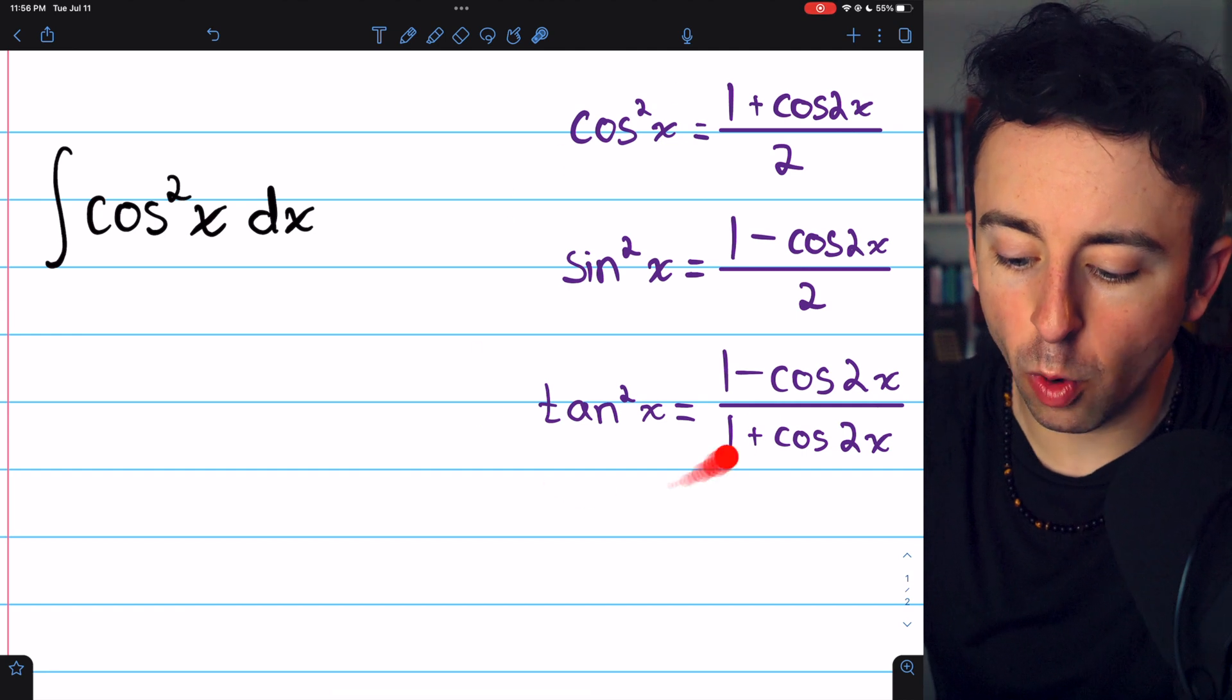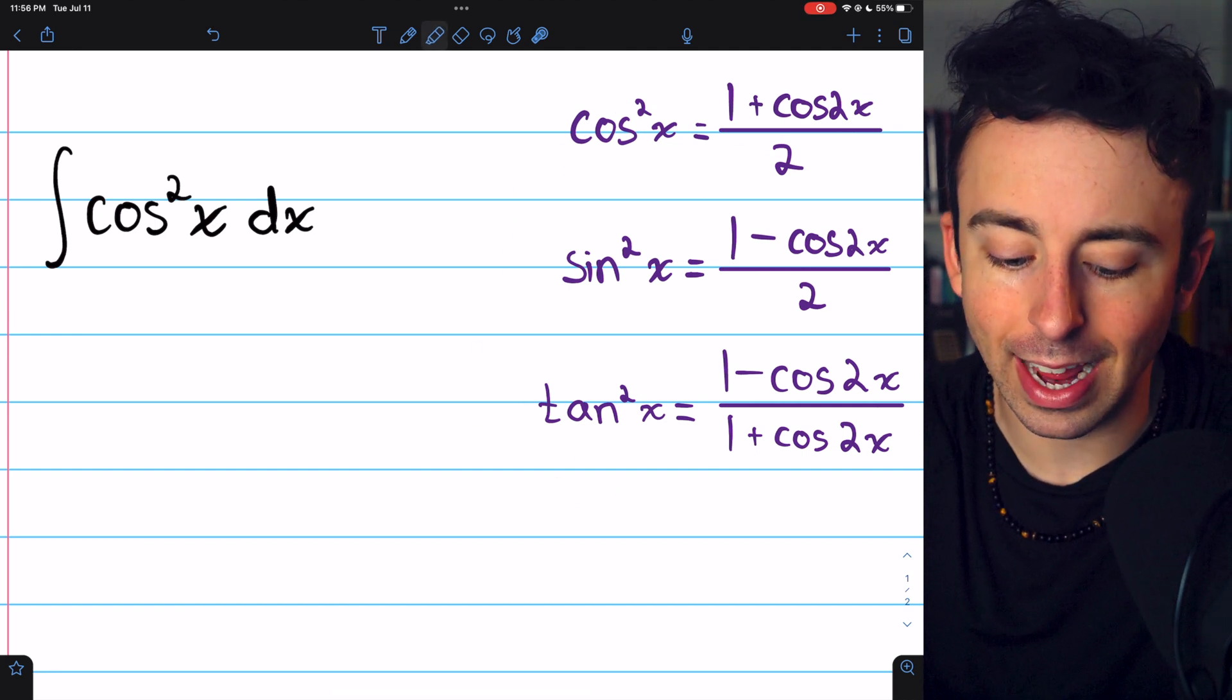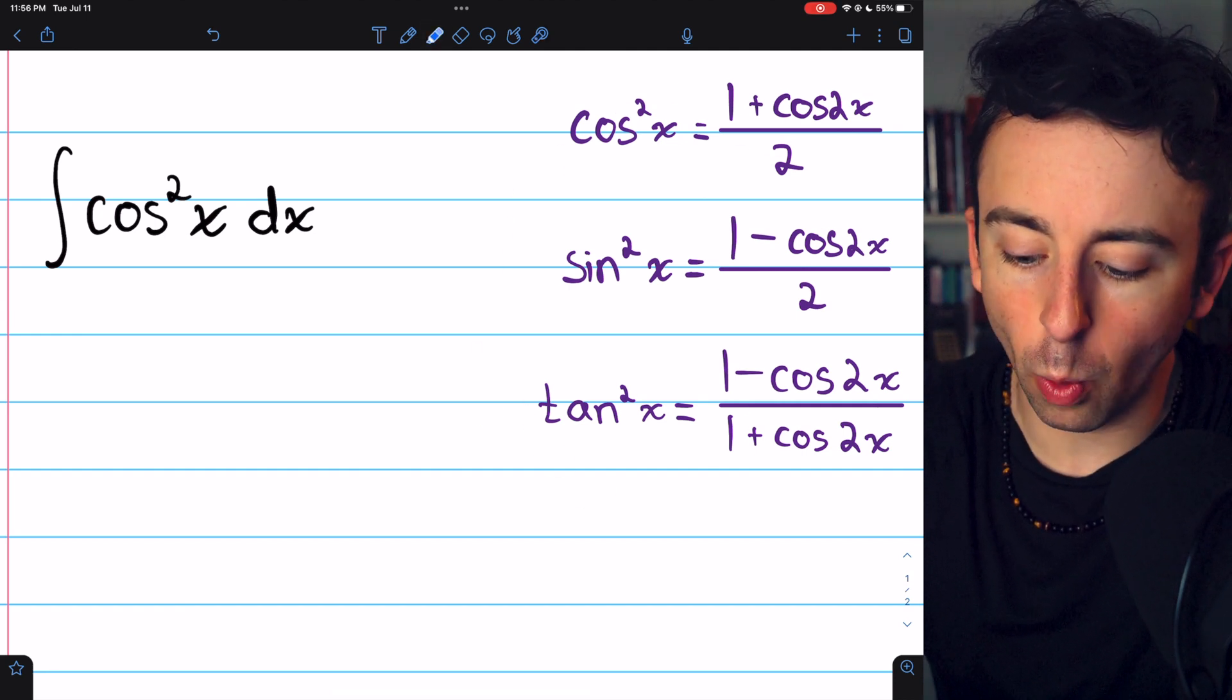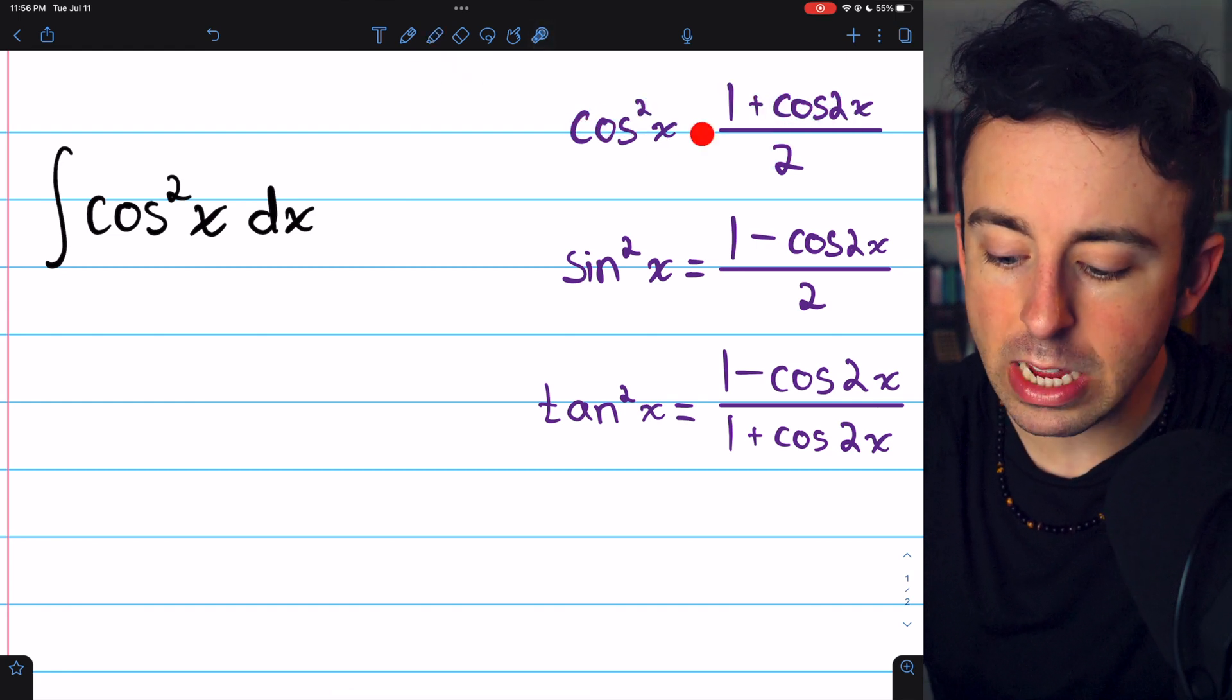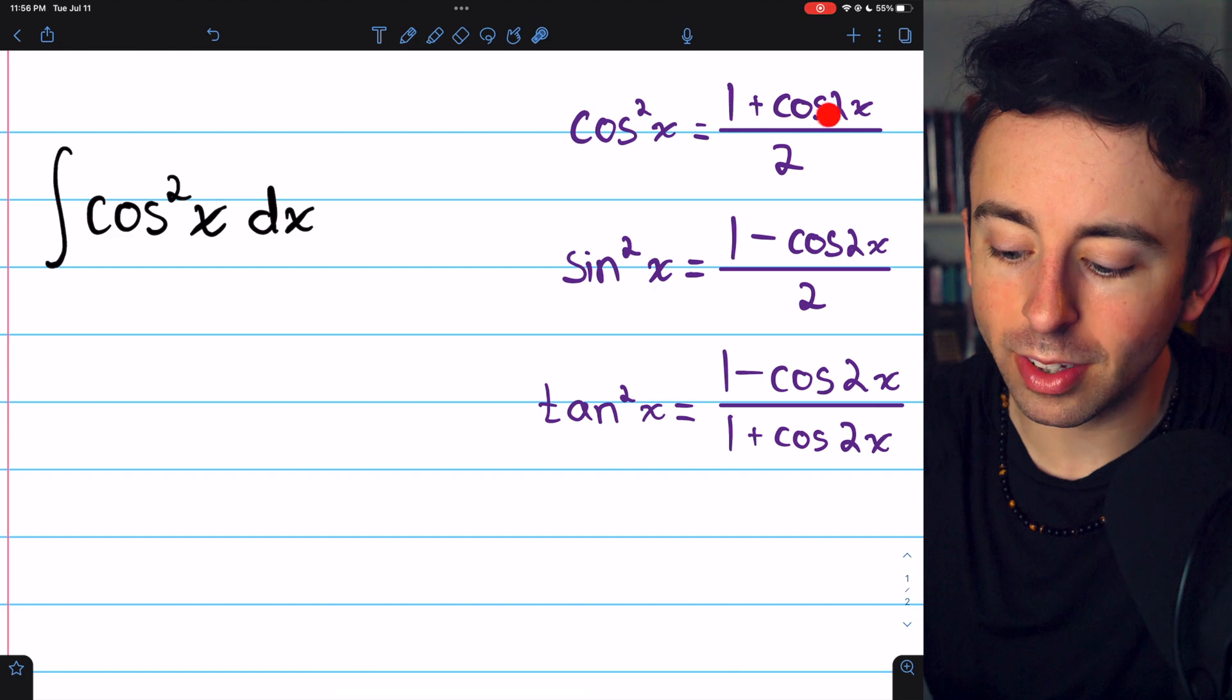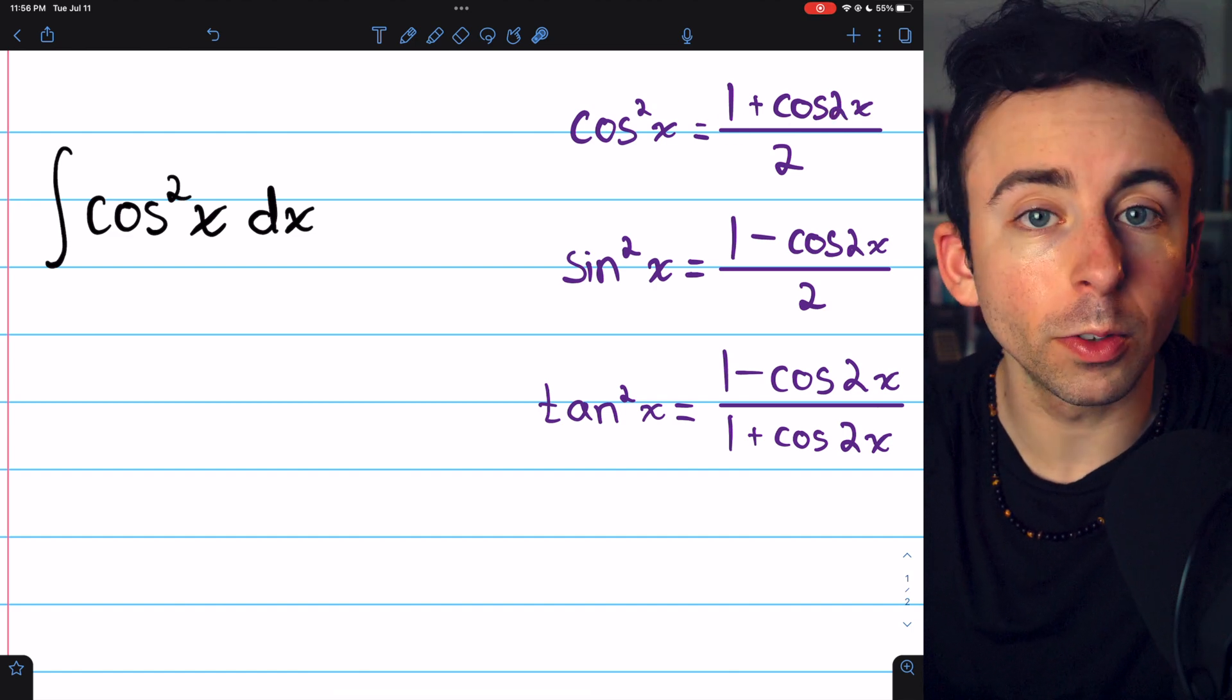These are the power reducing formulas for sine, cosine, and tangent. For this problem, we of course need the formula for cosine. Cosine squared of x equals 1 plus cosine of 2x all over 2.